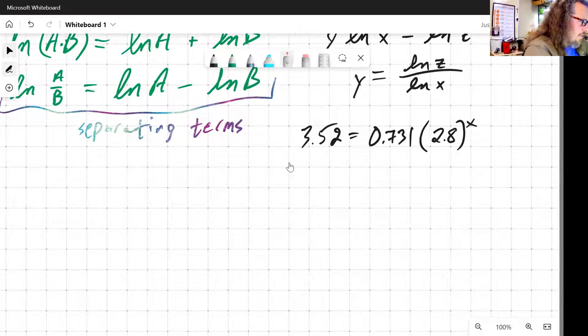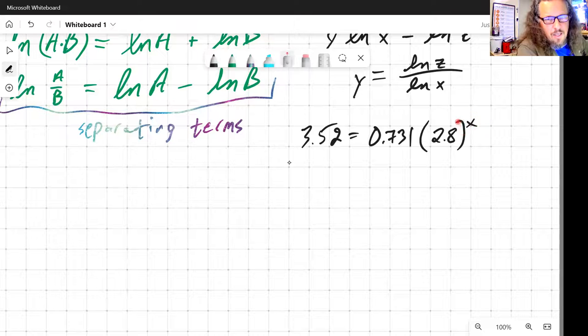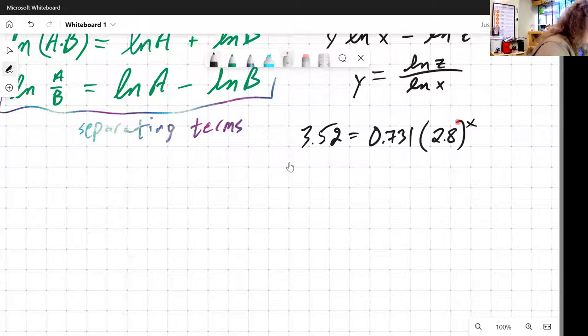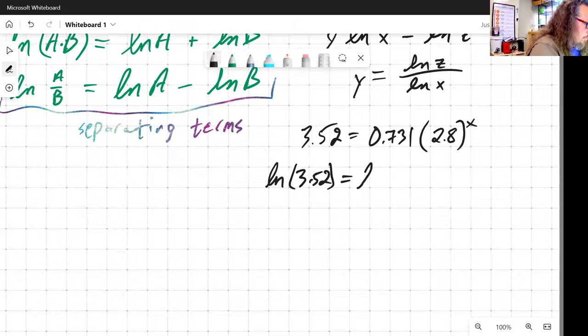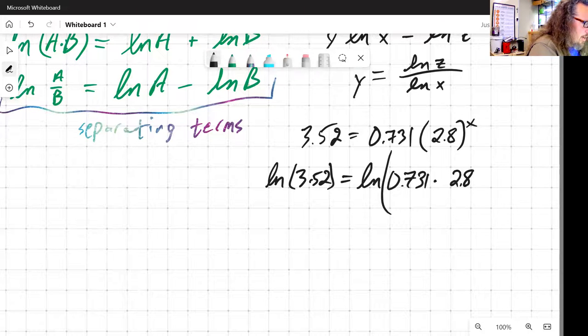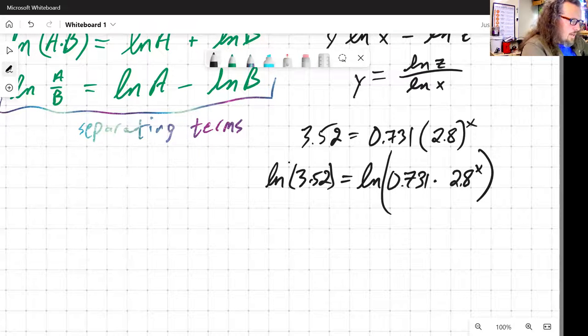I've got a variable in an exponent, so I'm going to want to do a log somewhere. Let's just go ahead and take the log right away. So natural log of both sides. Natural log of 3.52 is equal to natural log of 0.731 times 2.8 to the x.